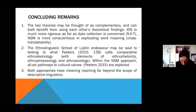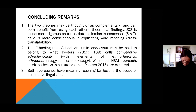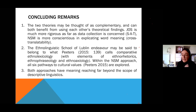To conclude: the two theories may be thought of as complementary and can both benefit from using each other's findings. JOS is much more rigorous as far as data collection is concerned. NSM is more conscientious in explicating word meanings by reductive paraphrase and in pointing to their relationship with culture. The Lublin Ethno-Linguistic School endeavour may be said to belong to what Peters 2015 calls comparative ethno-lexicology, with some elements of ethno-rhetorics and ethno-axiology, whereas within the NSM approach all six pathways to cultural values are explored. Both approaches, I'm sure, have meaning reaching far beyond the scope of descriptive linguistics.